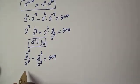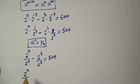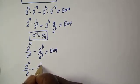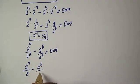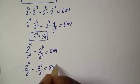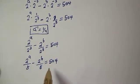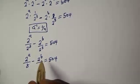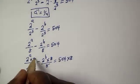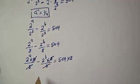This simplifies to 2 raised to power a over 8, minus 2 raised to power b over 8, equals 504. Now let's multiply both sides of this equation by 8. This will cancel the denominators.